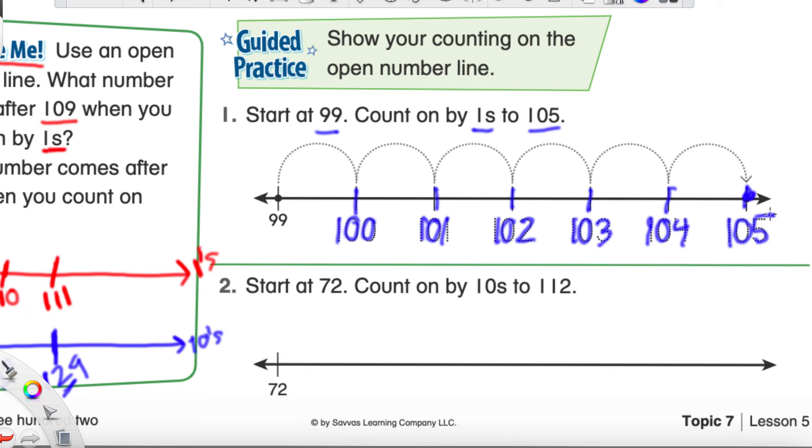Now, let's see how many jumps it would take to go from the number 99 to the number 105. It's going to take, let's see, one, two, three, four, five, six. So, it would take six jumps.